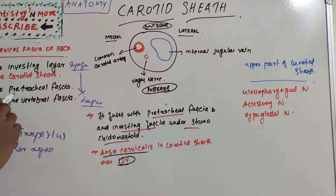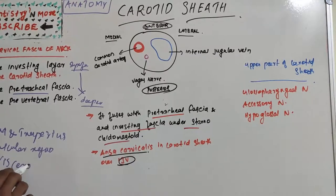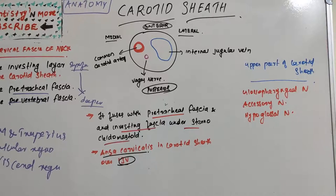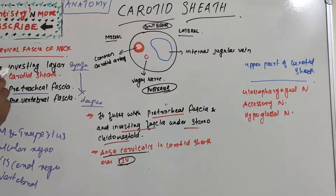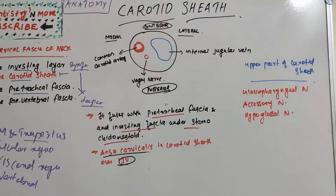The third layer is known as the pretracheal fascia, which encloses the visceral regions of the neck. The fourth fascial layer is the pre-vertebral fascia, which surrounds the vertebral regions of the neck. So to summarize: investing layer surrounds sternocleidomastoid and trapezius, the second is the carotid sheath, third is pretracheal enclosing visceral regions, and fourth is pre-vertebral surrounding the vertebral region.